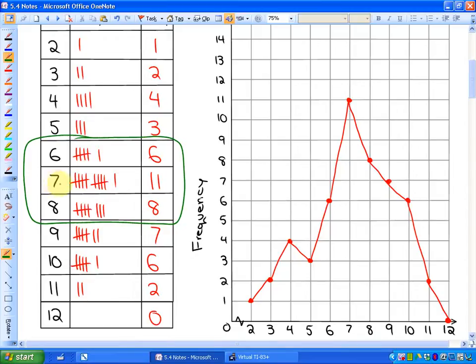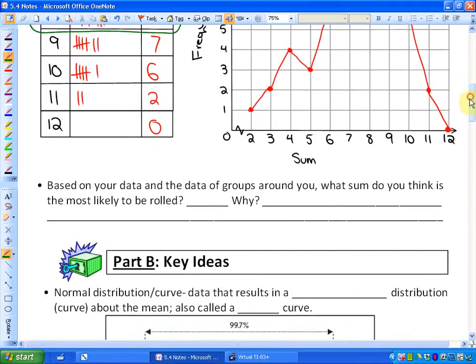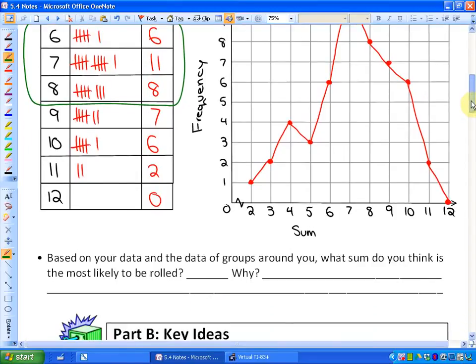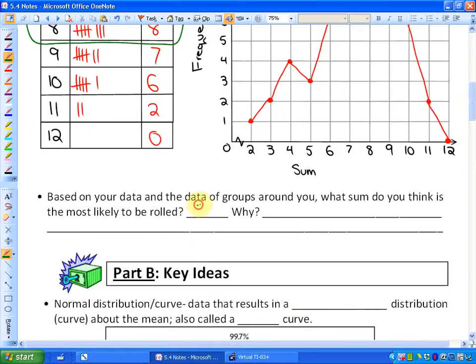So in this particular situation, this is actually called normal distribution, but let's just look at the conclusion to this activity first. Based on your data and the data of groups around you, what sum do you think is the most likely to be rolled? So if you had looked at lots of groups, you would notice that probably the number seven would be the most likely to be rolled.